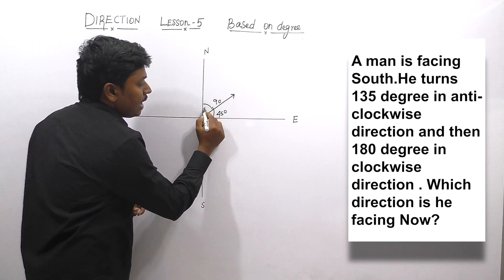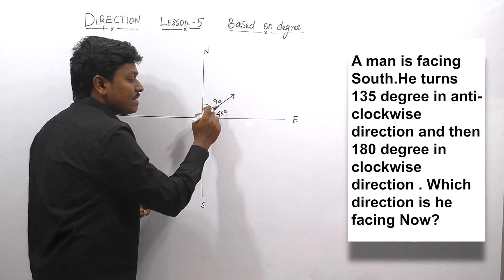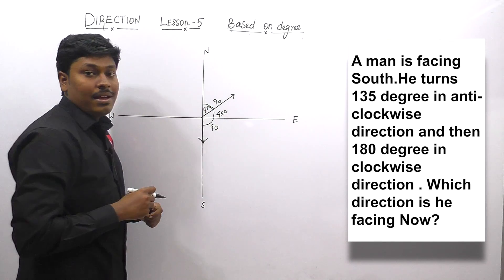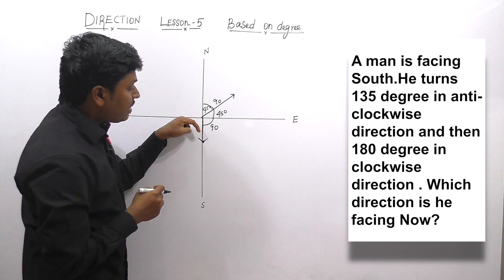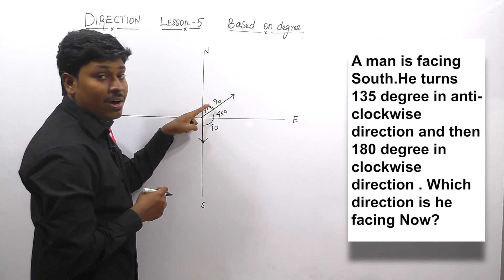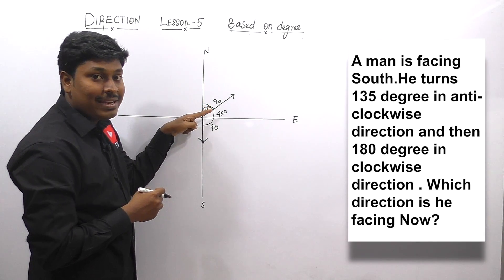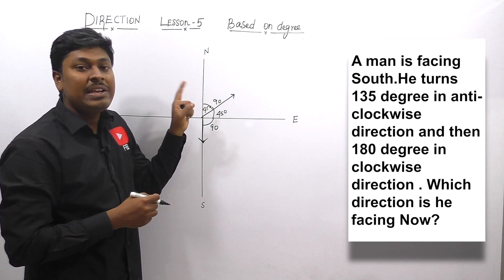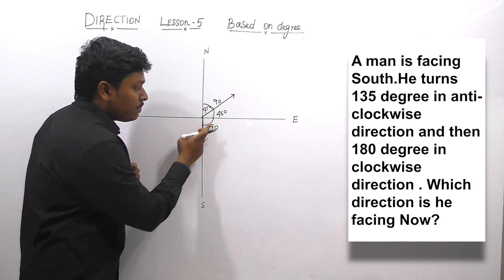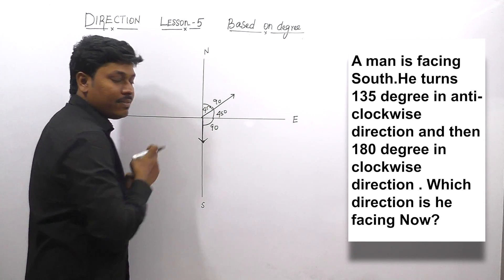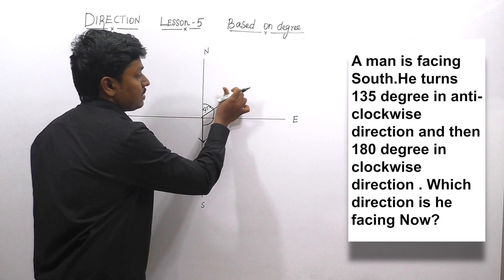So from here, the man is now facing northeast direction — that is 135° in anti-clockwise direction. 90 plus 45° equals 135°.